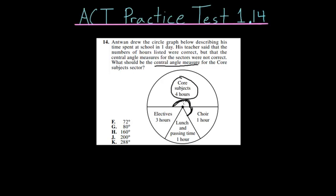The key to understanding this problem is recognizing that the total central angle measure for everything, like if you go around in an entire circle, the total central angle is 360 degrees. So we just have to figure out what portion of this 360 degrees the core subjects take up.